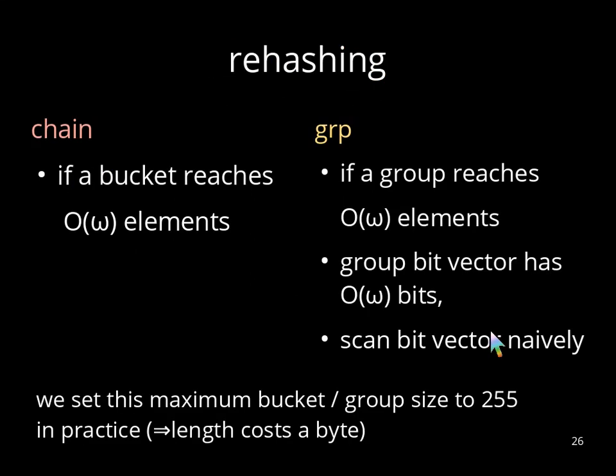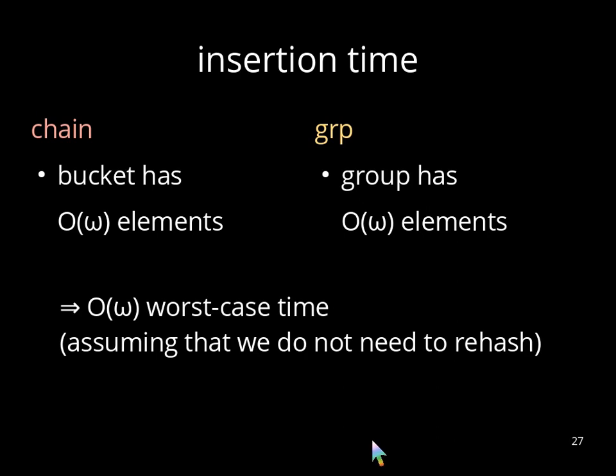Next, we focus on rehashing. We do a rehashing in chain whenever a bucket reaches order of omega elements. In group, we do a rehashing when a group reaches order of omega elements. Consequently, we can store the group bit vector in order of omega bits. And it's feasible to scan this bit vector naively without any fancy rank select data structures. In practice, we set this bounds for the maximum group and bucket size to 255. And therefore, we can store the bucket length in a single byte. A consequence is that a bucket in chain and a group in group have always order omega elements.